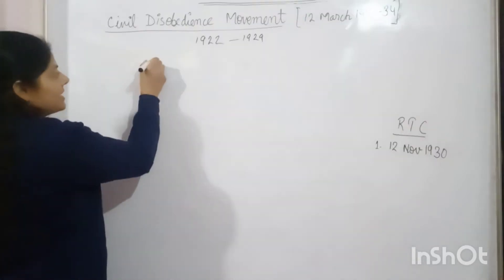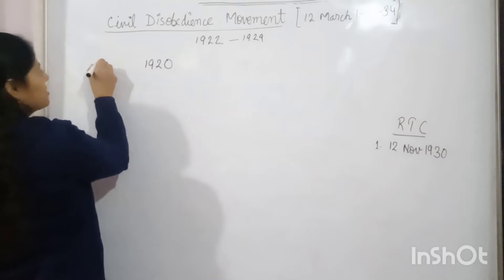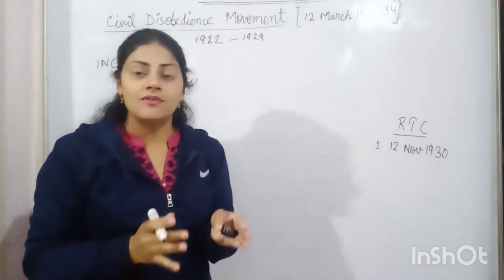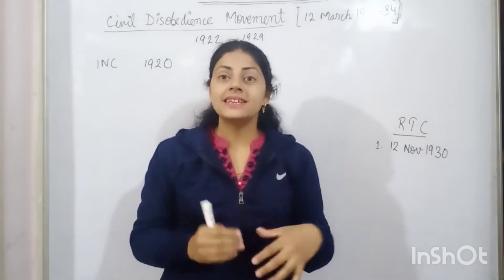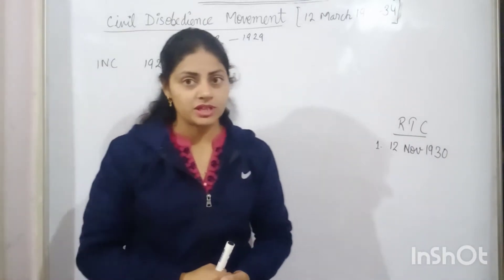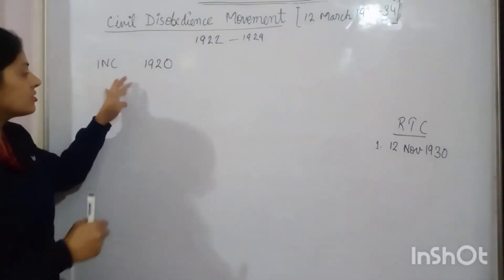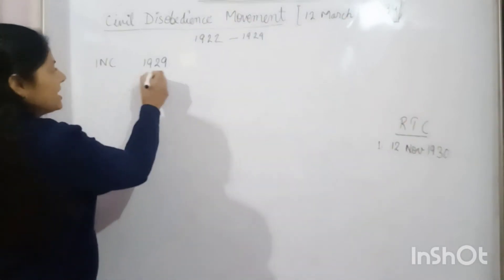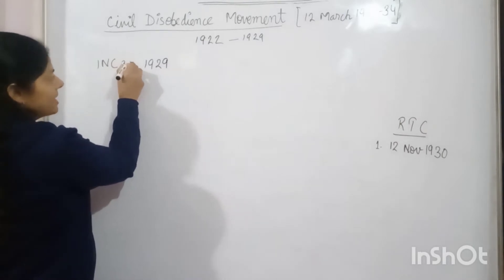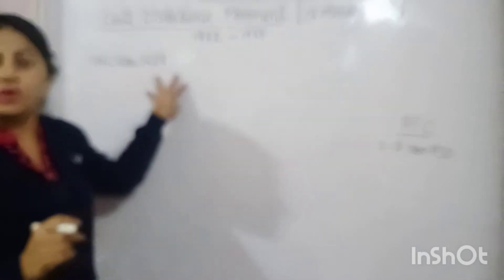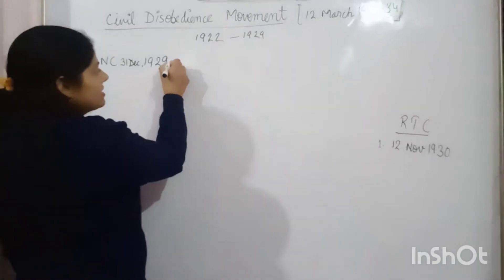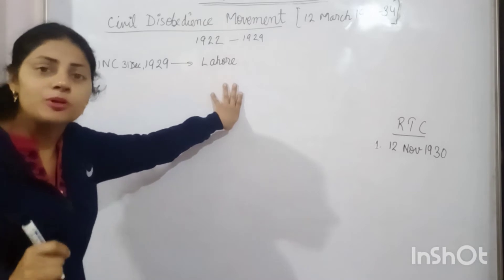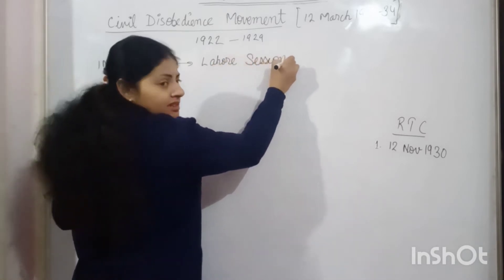In the year 1929, the Indian National Congress session took place. The Indian National Congress held a session every year, and this particular session is very important. It was held on 31st December. This session took place at Lahore and is popularly known as the Lahore Session of the Indian National Congress.